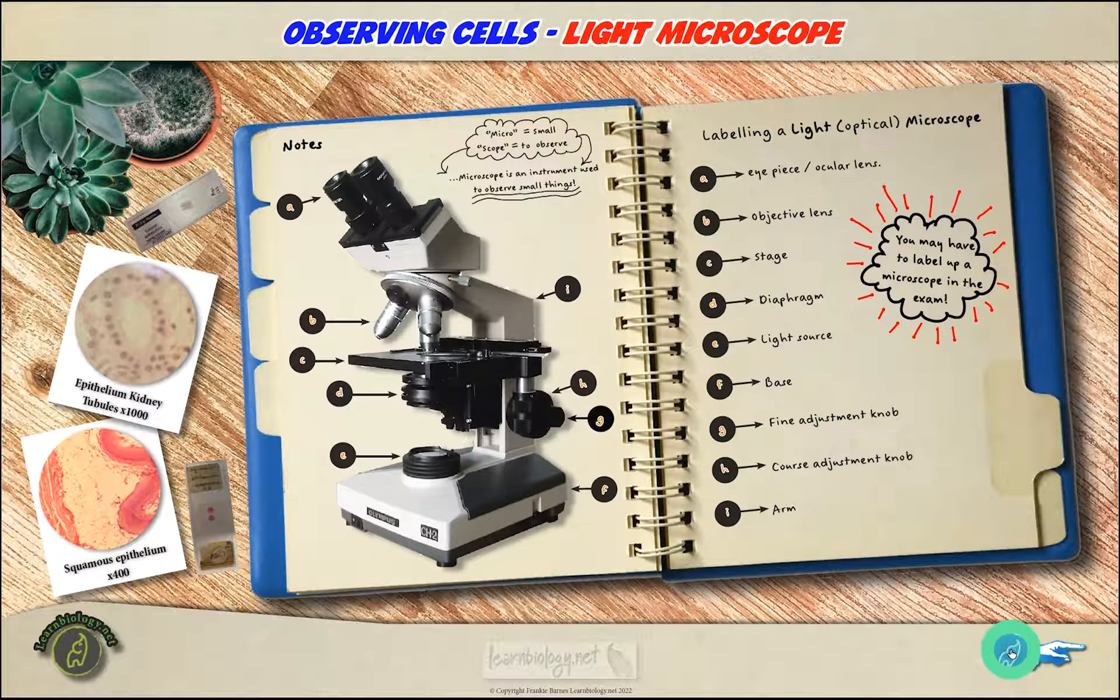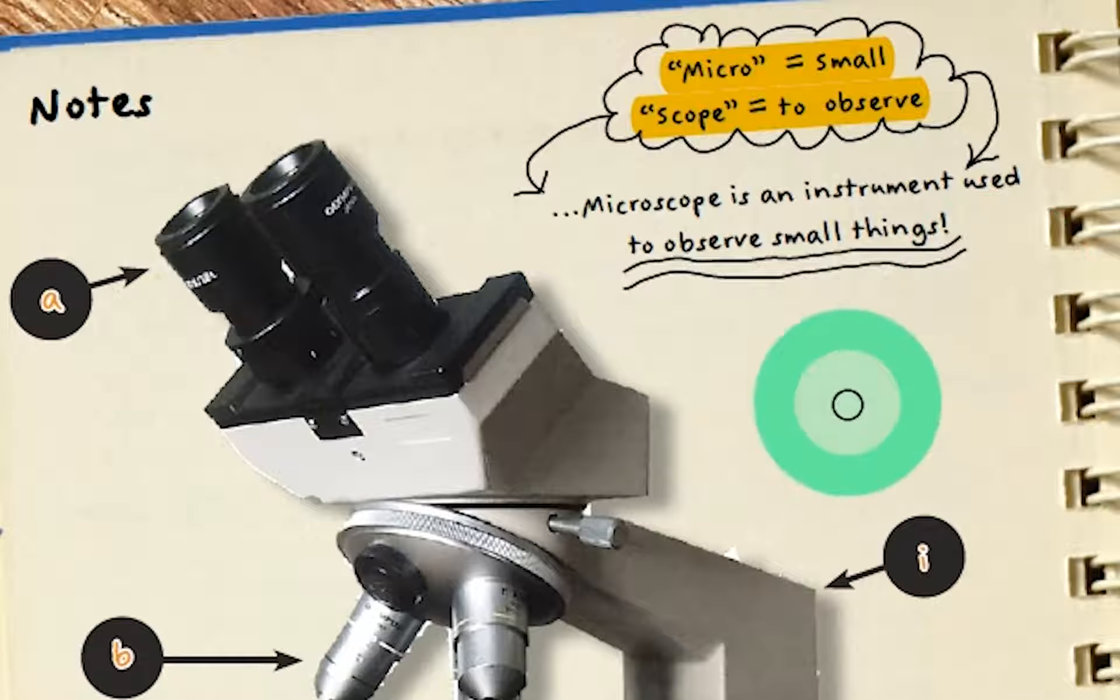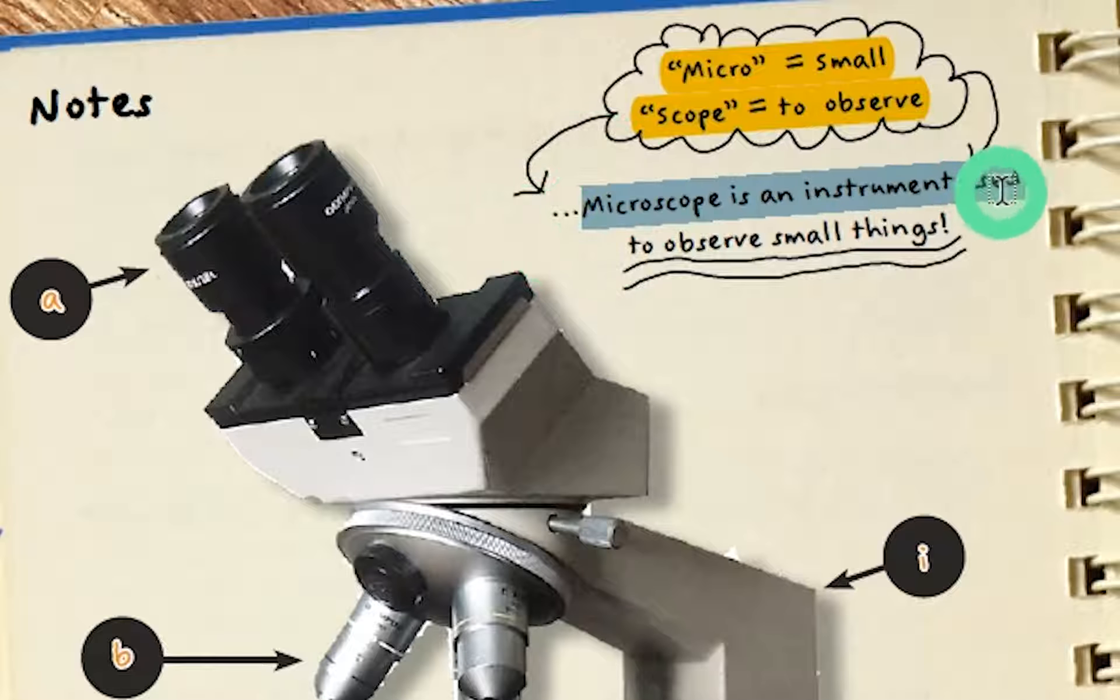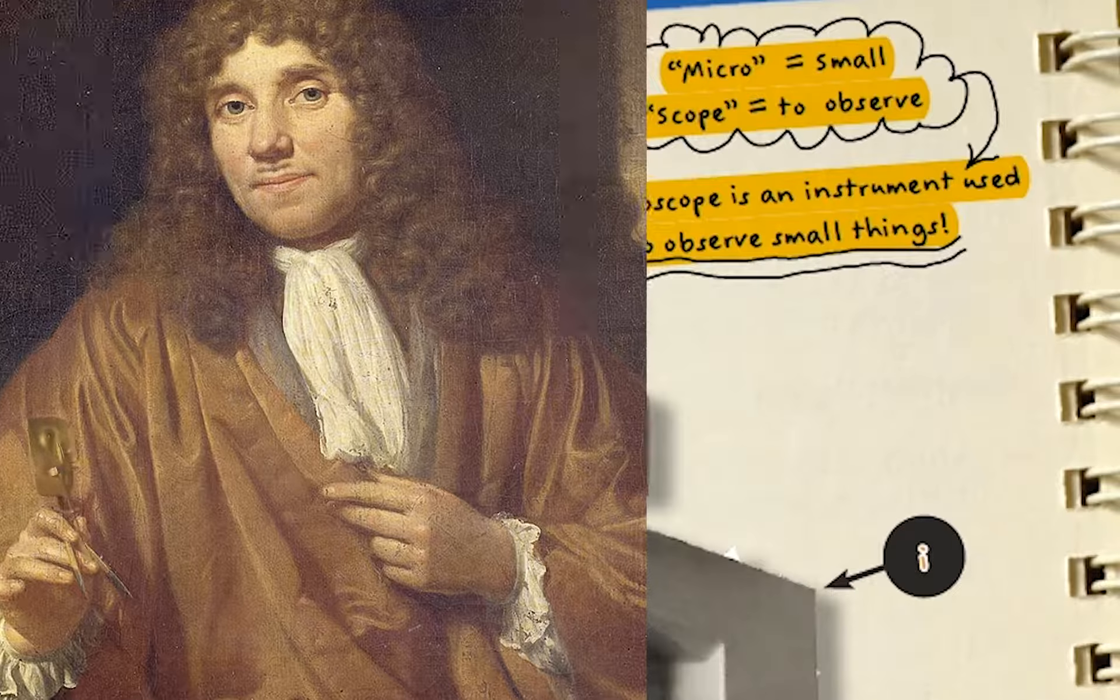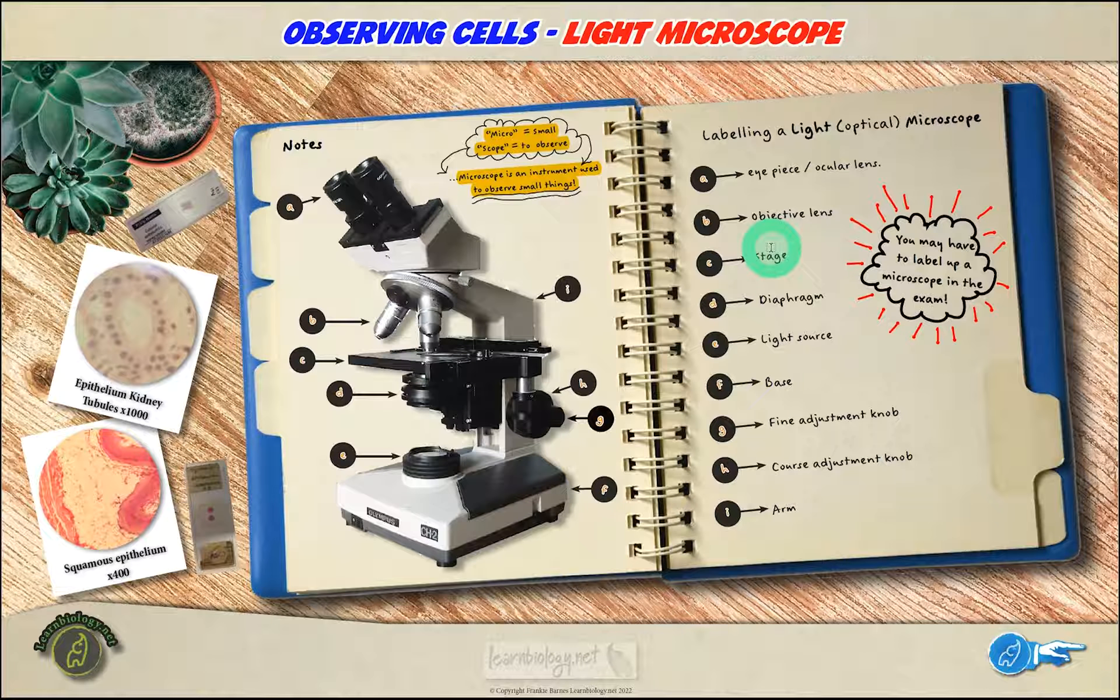Micro comes from the Greek word mikros meaning small, and scope means to observe or view, just to look at stuff. So a microscope is an instrument to observe, to view small things. Microscopes like what Van Leeuwenhoek developed were very good and could magnify things up to 500 times their actual size, but we've come a long way since the 1660s.